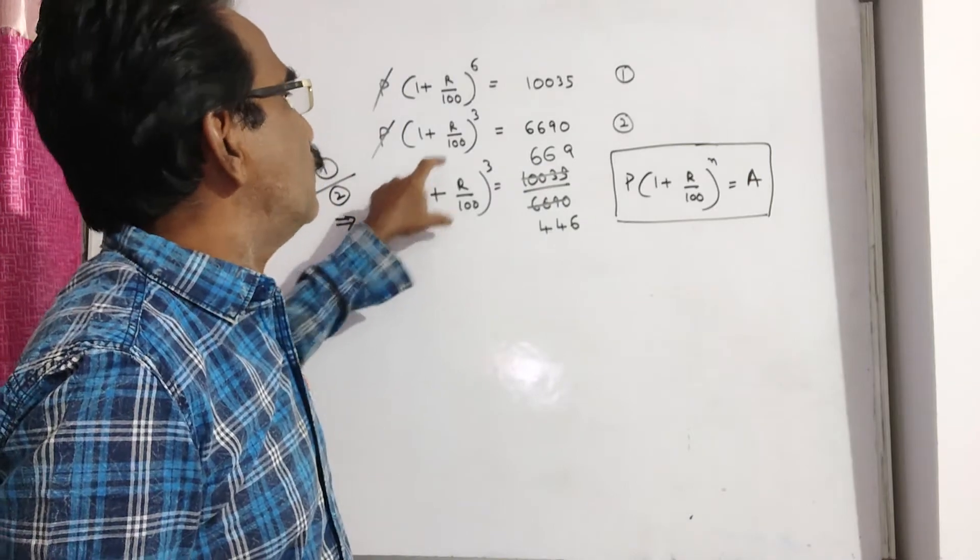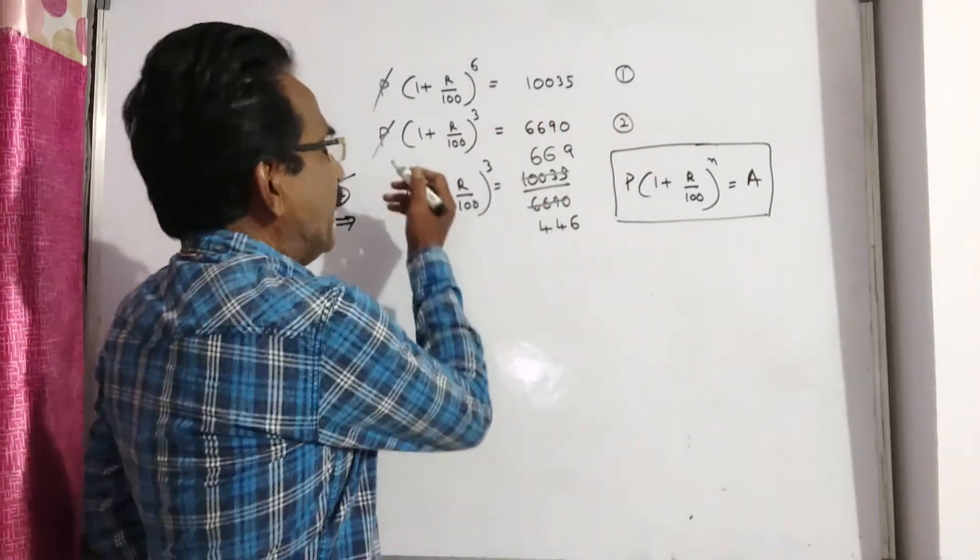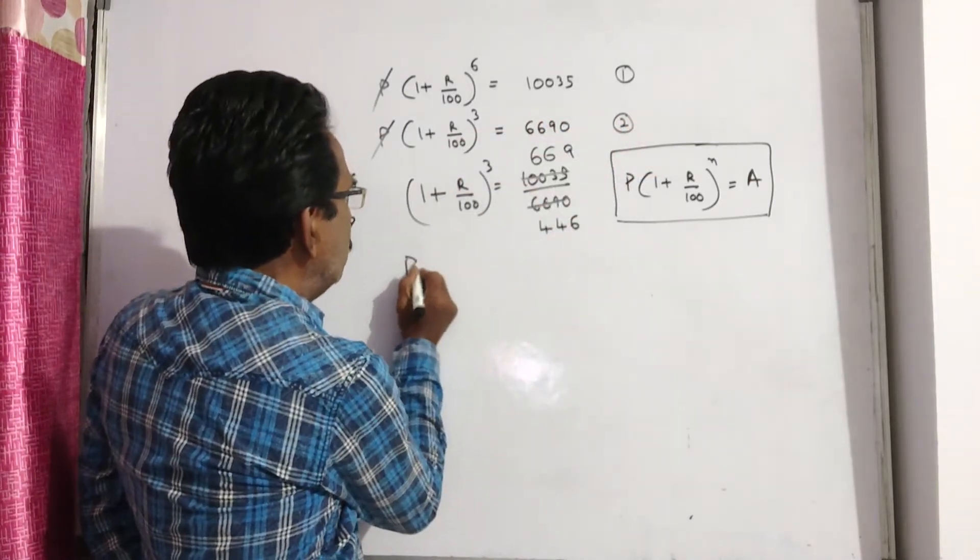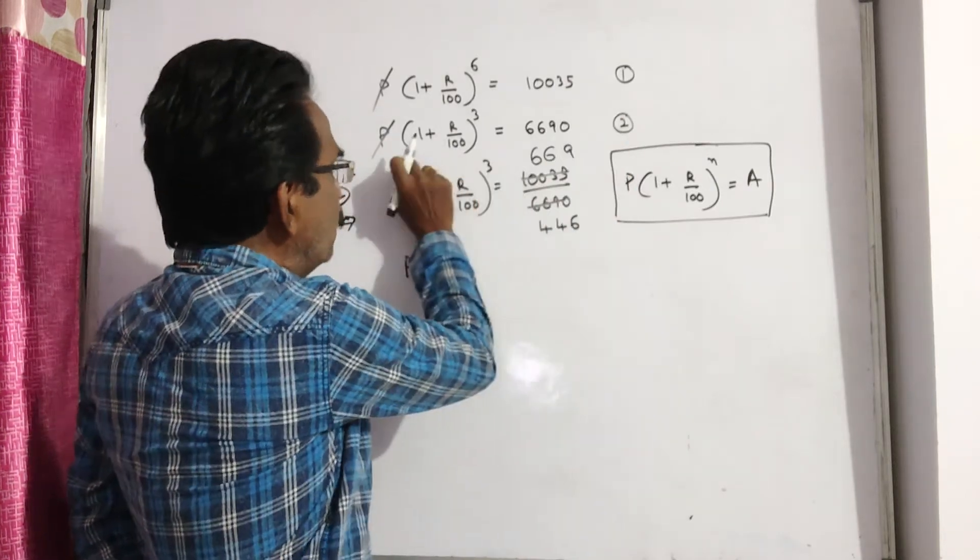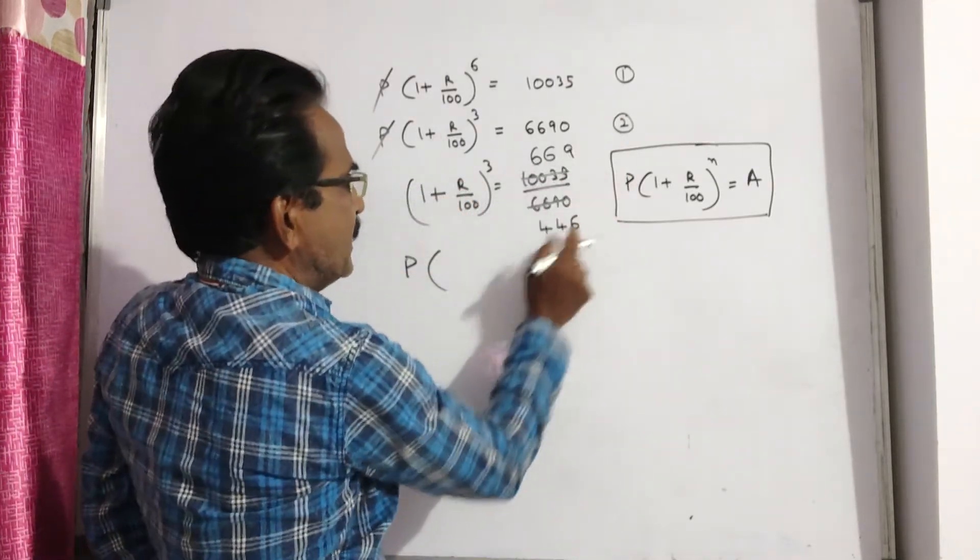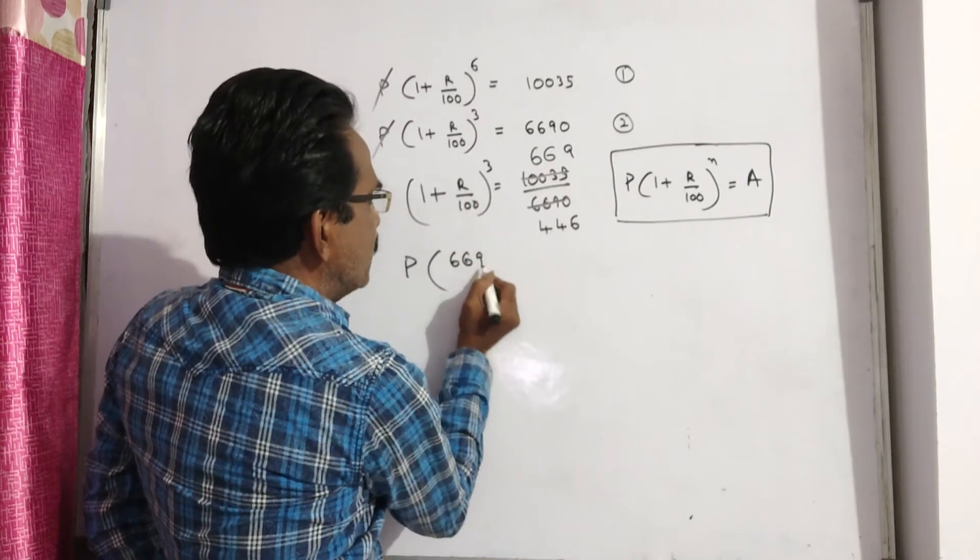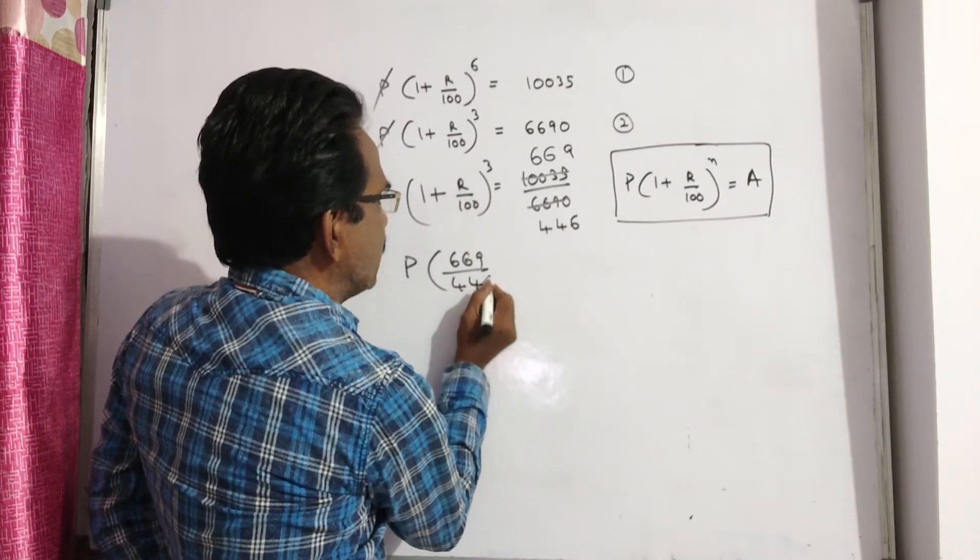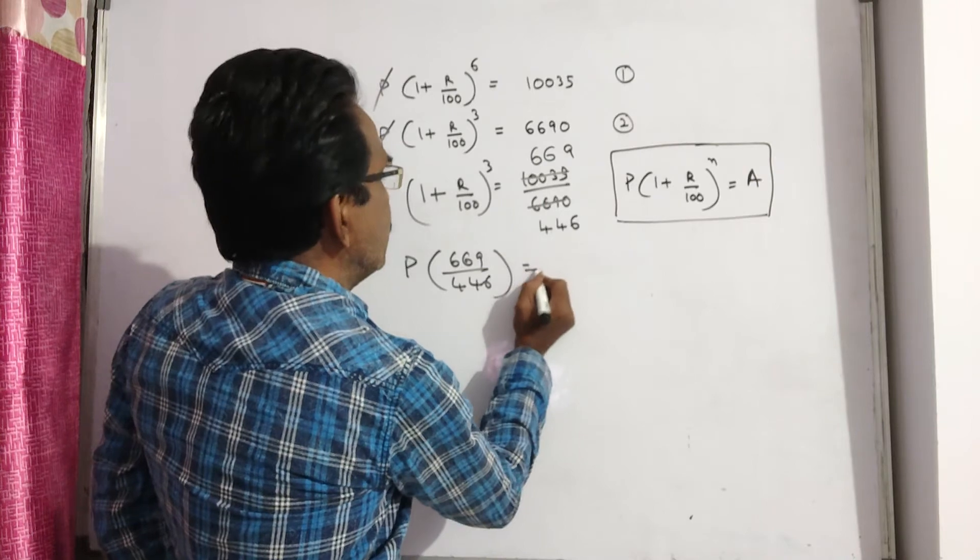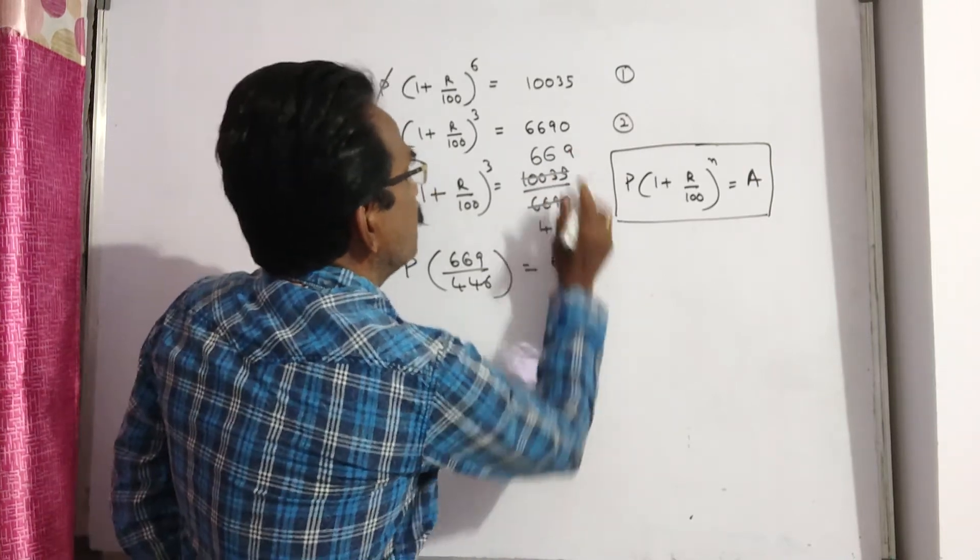Let us substitute this value in equation 2 to get P. So, P into equation 2, P into 1 plus r by 100 whole power 3, that is 669 by 446. This is equal to 6690.